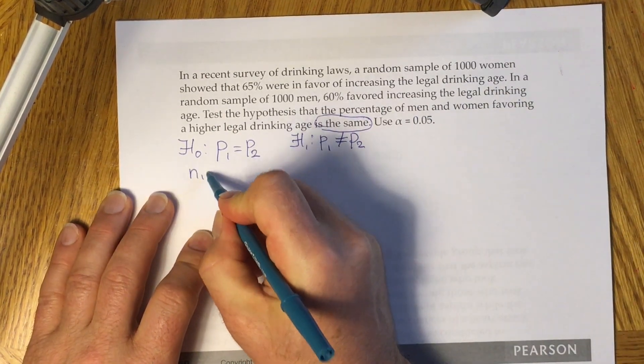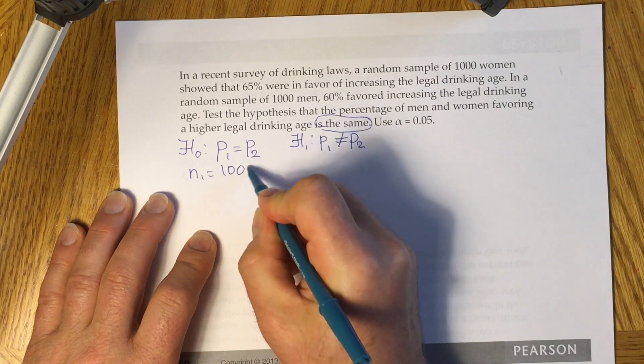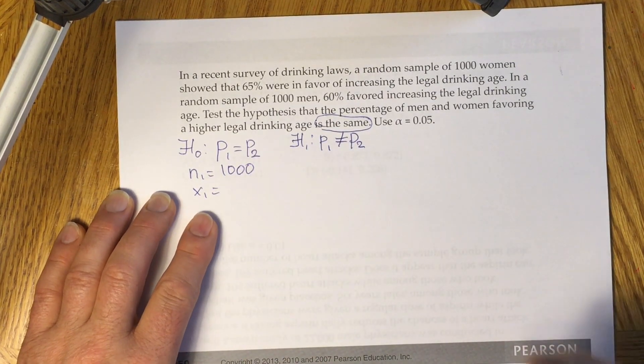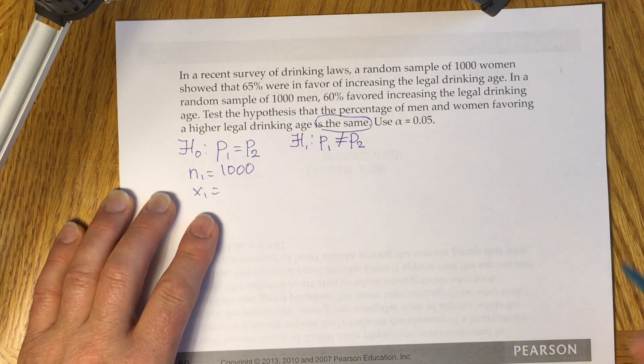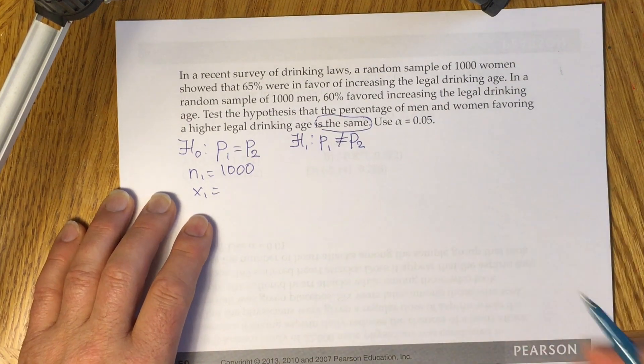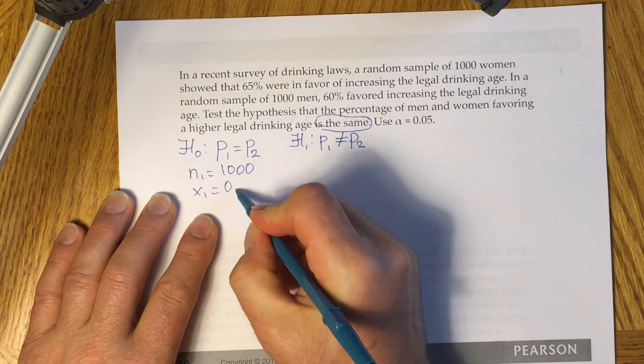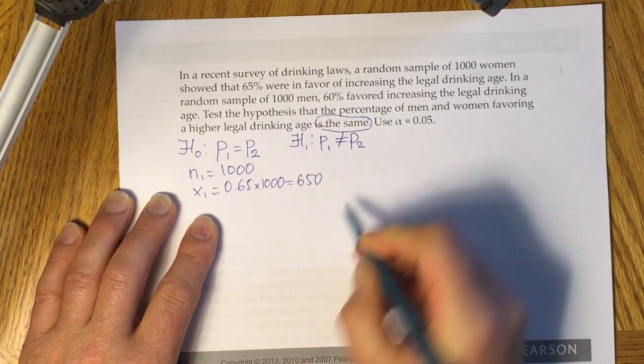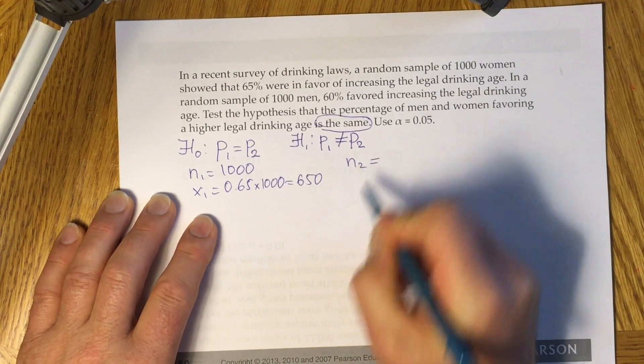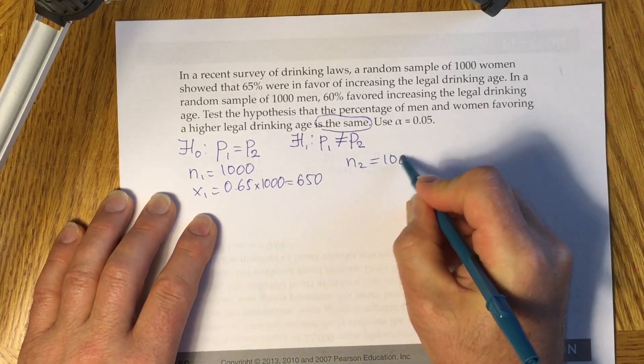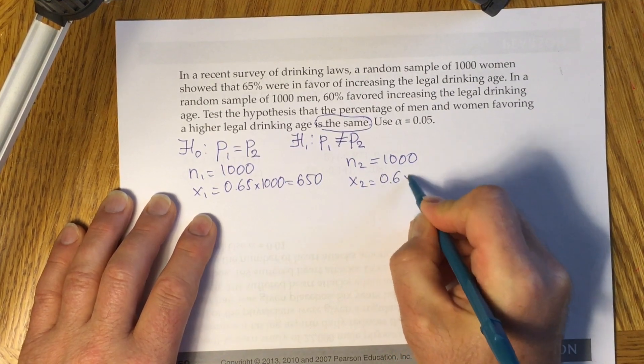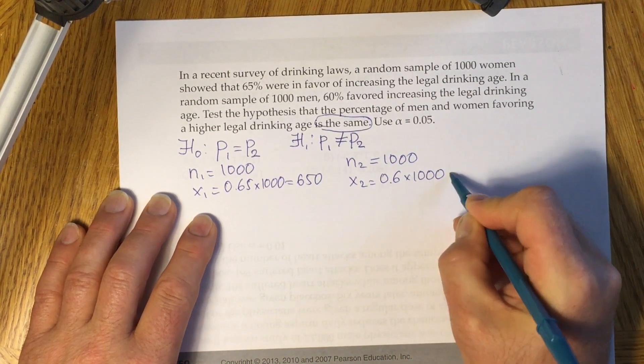Then you have n1 equals 1,000 and x1 is 65% of this 1,000. So 0.65 times 1,000 gives you 650. Then you have second sample, men, 1,000 people, and x2 will be 0.6 times sample size, which is 600.